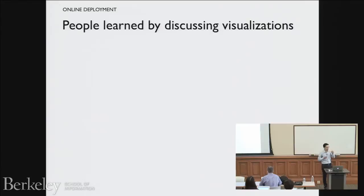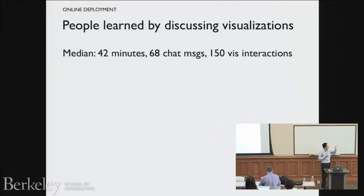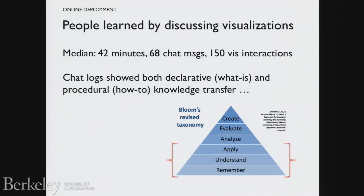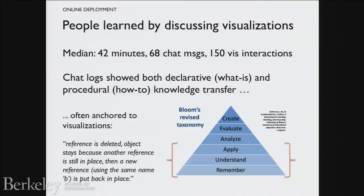People showed signs of learning, often by discussing the visualization. We coded for indicators of knowledge transfer — we found knowledge transfer at the lower three levels of Bloom's taxonomy, which you can think of roughly as syntax, semantics, and transfer — applying what you learn to a slightly different problem. Often the knowledge transfer was anchored to the visualization. A representative tutor quote talks about references, pointers, shapes — if you only had Google Docs or a code editor, you can't talk about this because you don't actually know what's going on inside. The visualization really mediated the knowledge transfer.